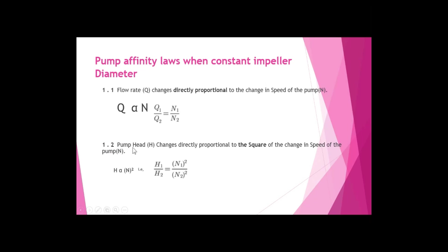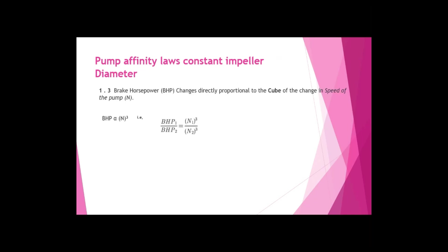For relationship 1.2: pump head H changes directly proportional to the square of the change in speed of the pump, so H1/H2 = N1²/N2². For relationship 1.3: brake horsepower changes directly proportional to the cube of the change in speed of the pump, so PHP1/PHP2 = N1³/N2³.